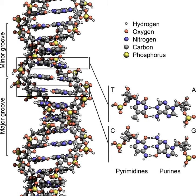In contrast, other proteins have evolved to specifically bind particular DNA sequences. The most intensively studied of these are the various classes of transcription factors. These proteins control gene transcription. Each one of these proteins binds to one particular set of DNA sequences and thereby activates or inhibits the transcription of genes with these sequences close to their promoters. The transcription factors do this in two ways. Firstly, they contact the RNA polymerase responsible for transcription either directly or through other mediator proteins. This locates the polymerase at the promoter and allows it to begin transcription.